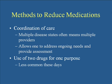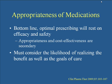Coordination of care is paramount, especially in transitions between health care settings. With multiple disease states, patients often have multiple providers, and communication among them is essential. Good coordination allows for ongoing assessment of medication needs. Also consider the use of one drug for two purposes — if you can treat two or three conditions with one medication, that makes more sense. The bottom line is that optimal prescribing rests on efficacy and safety; appropriateness and cost-effectiveness are secondary. You want a drug effective for its intended purpose, and it must be safe.